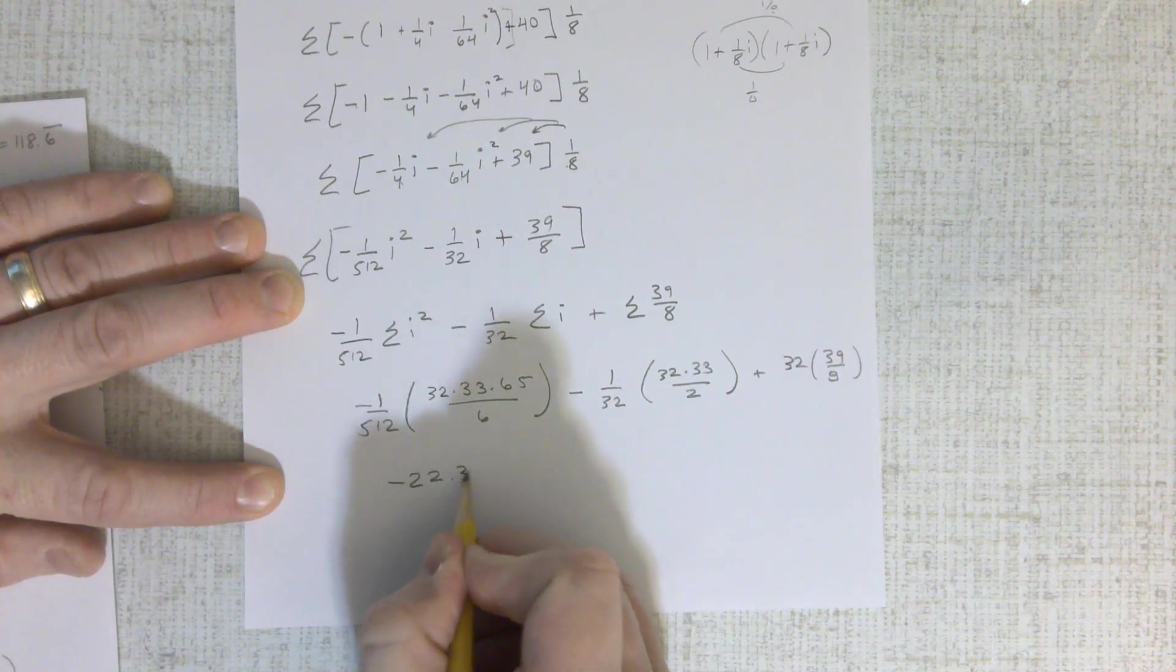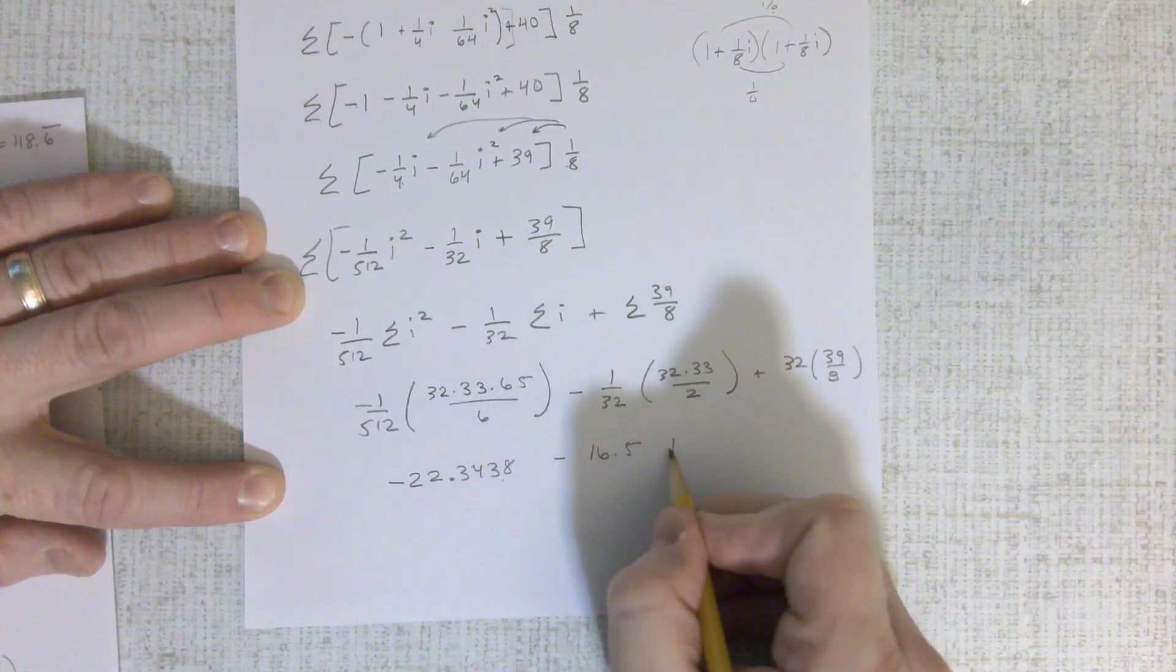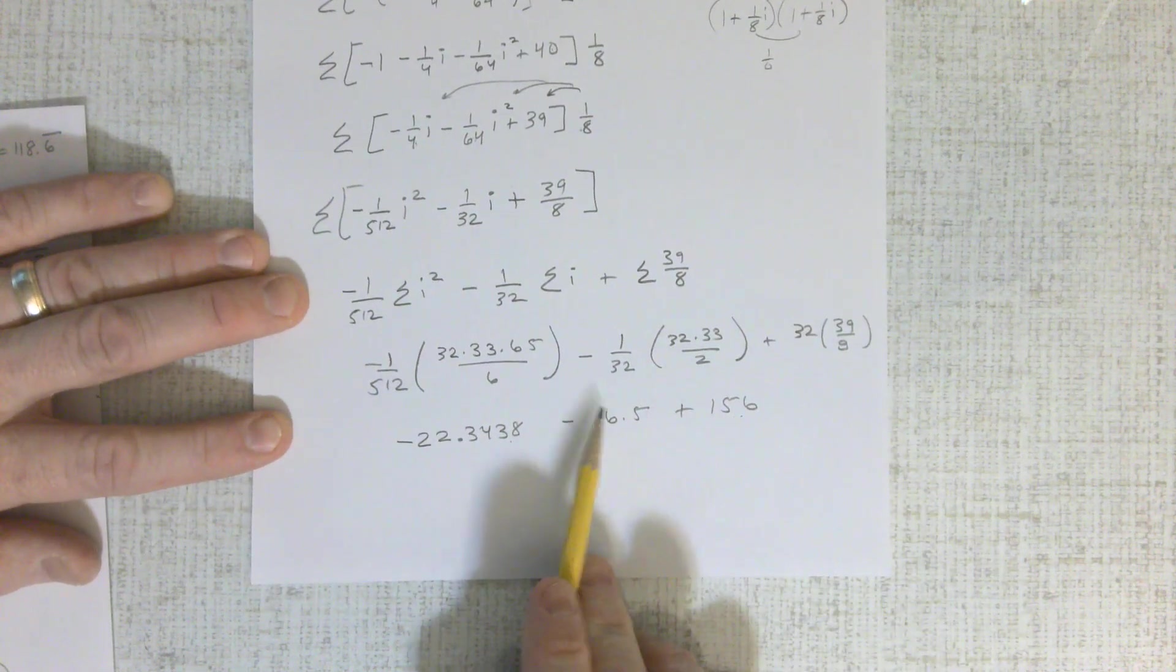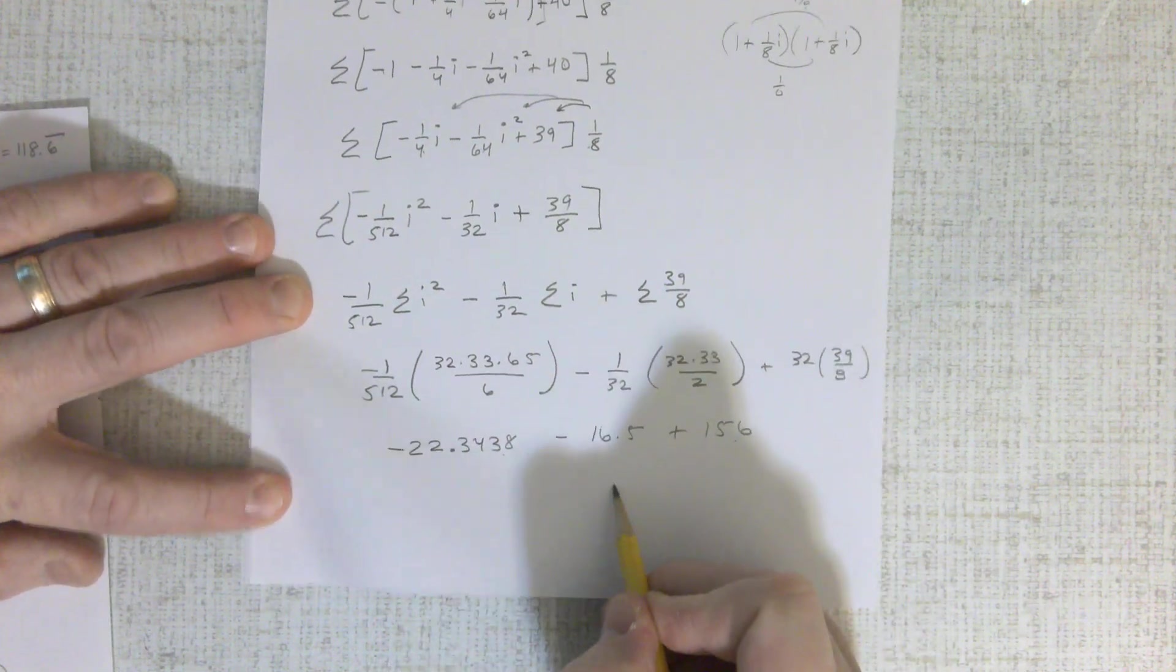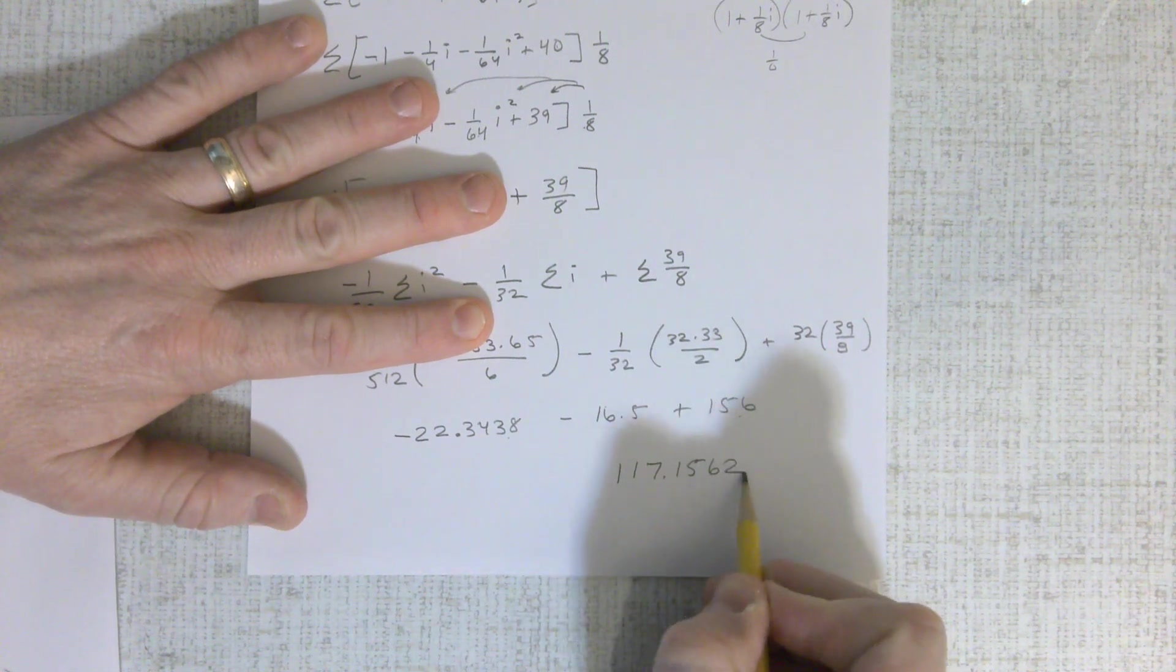If you do this math, it's a negative 22,343.8. And go ahead and round to 4 on this. It's fine. Minus 16.5 plus 156. 156 minus minus. It's about to be 117.1562.